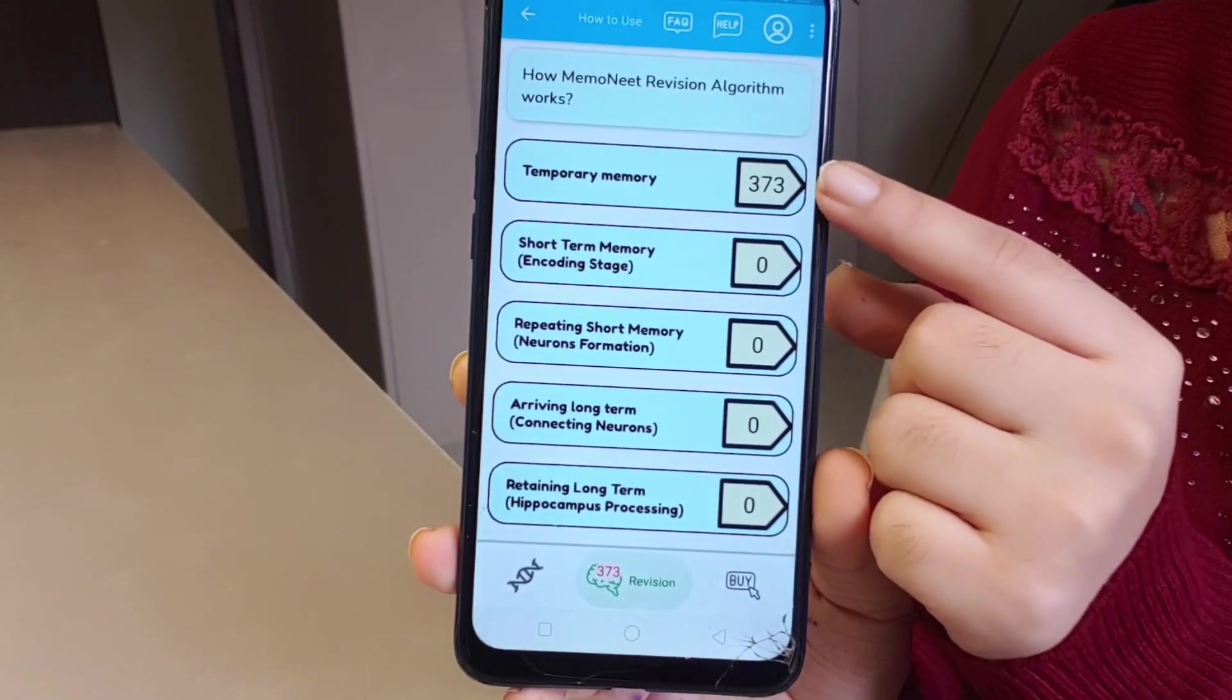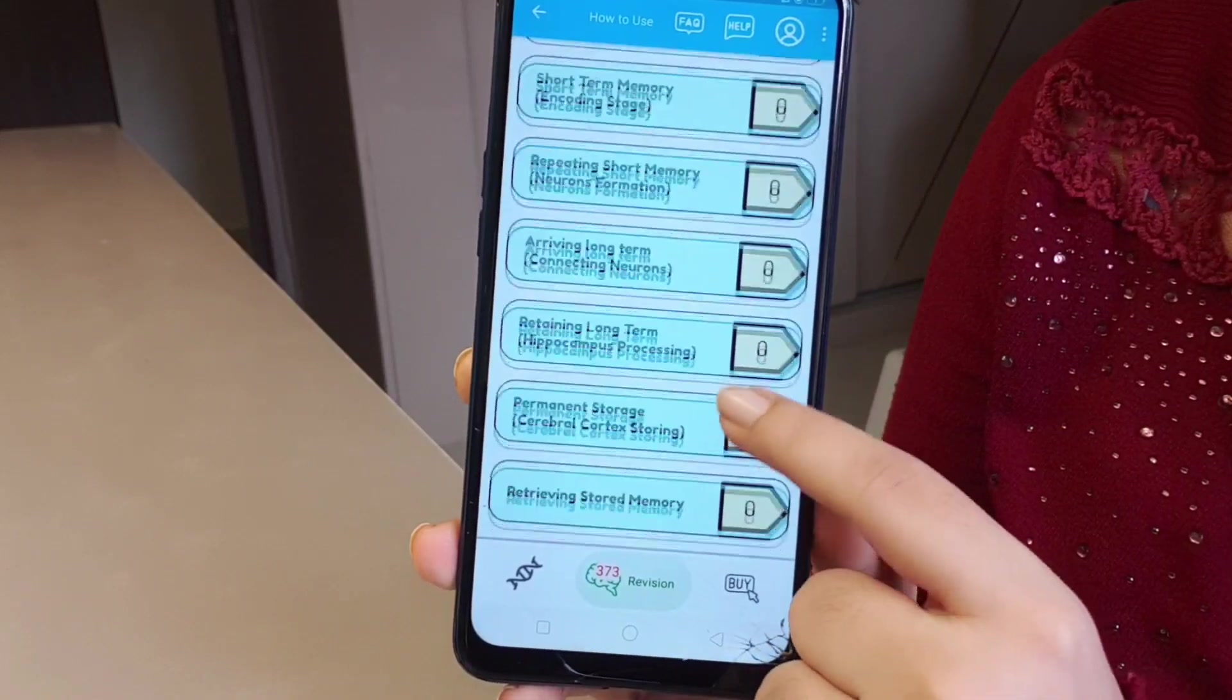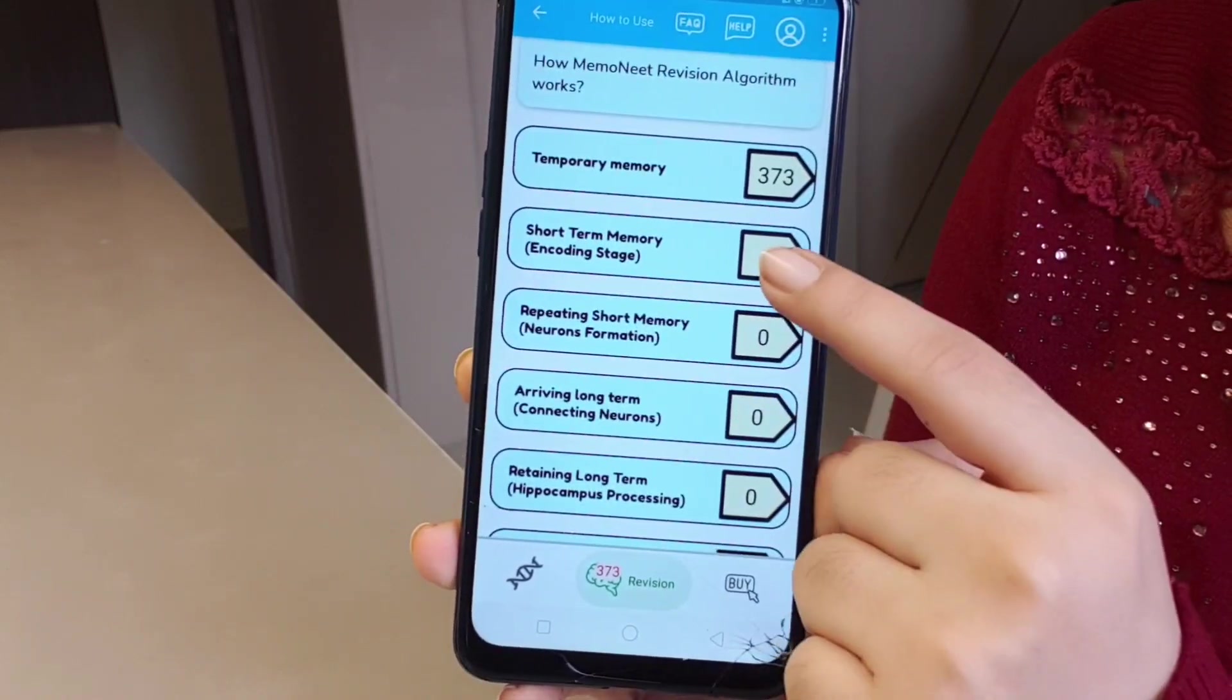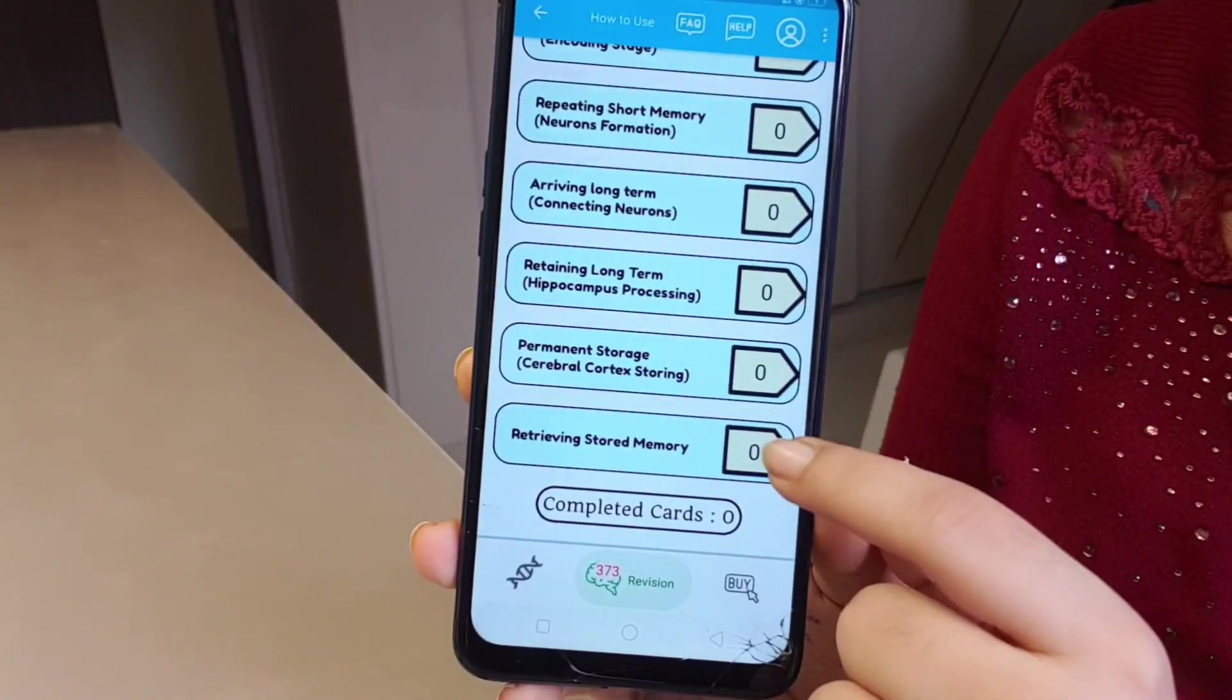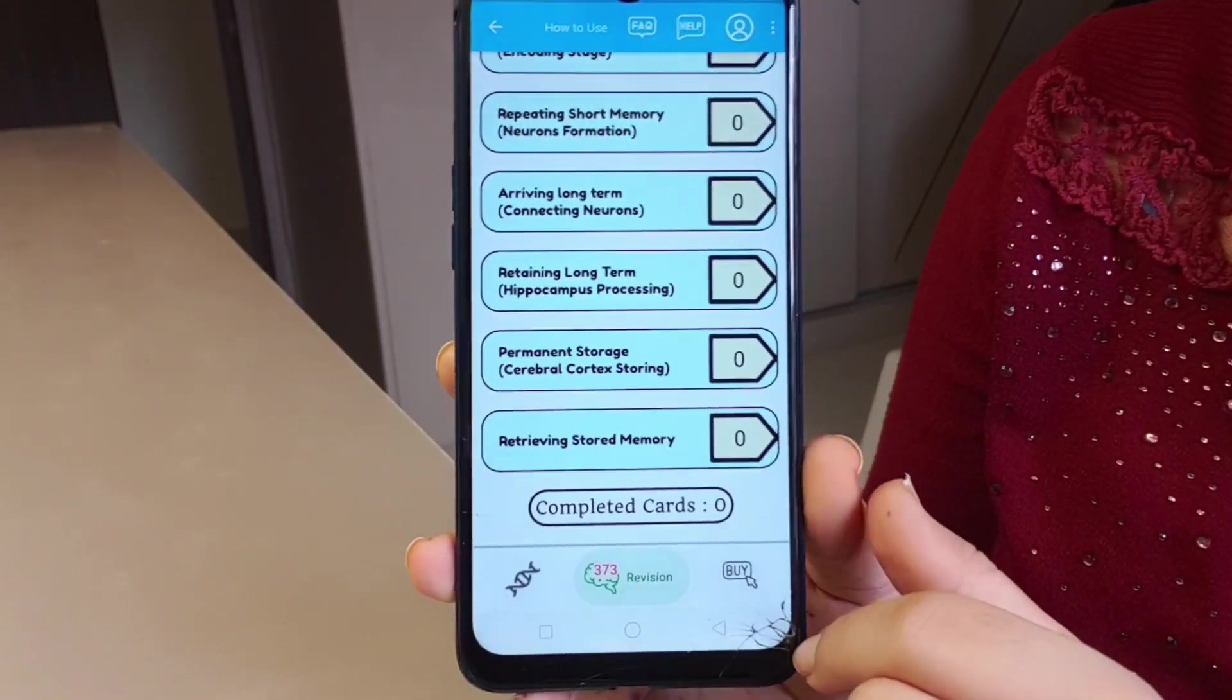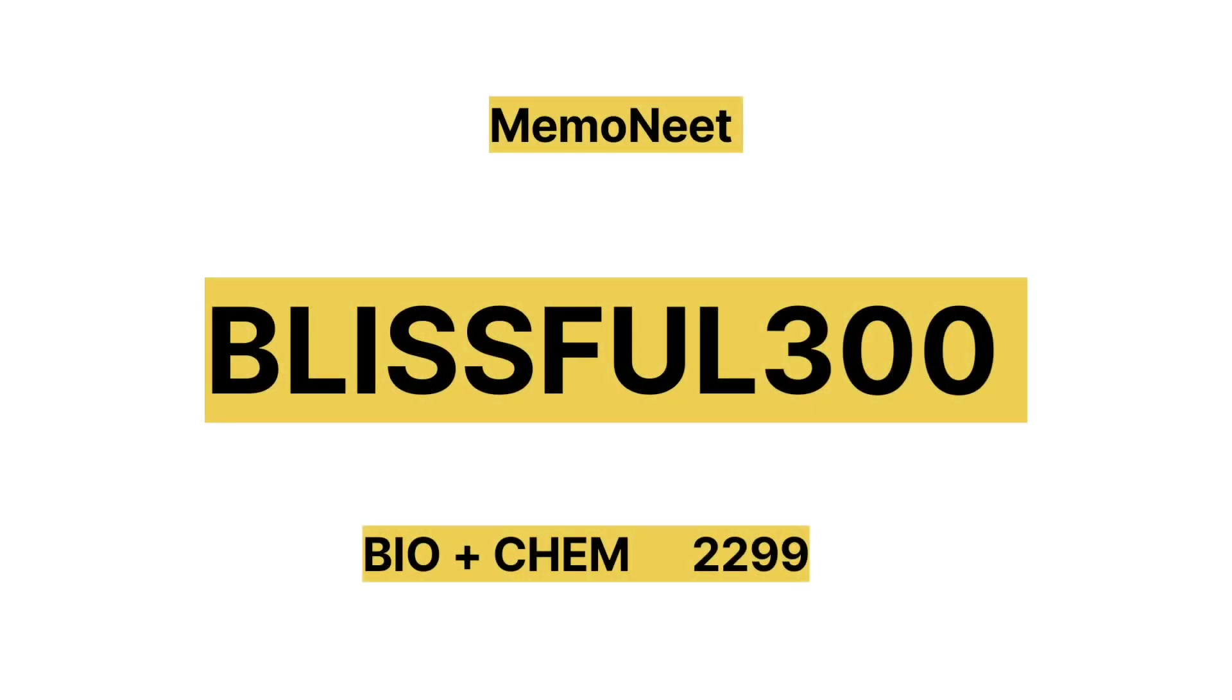Every question that you practice in Memonit will appear in regular intervals like first day, third day, and fifth day in a Fibonacci series, and only move to the next level of memory if you answer it right. For bio and chemistry subscription, it's ₹2,599, and if you use this code, you can get it at ₹2,299.